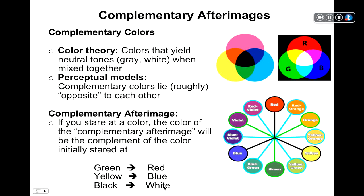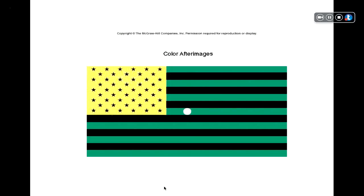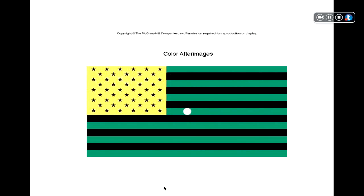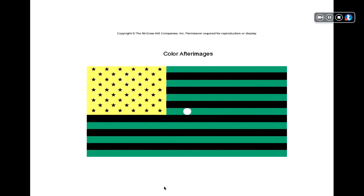Let's look at a complementary afterimage — stare at the white circle in the center of the flag. What you should see afterward is the American flag. After staring at green, black, and yellow, you see red, white, and blue. According to Young-Helmholtz theory, we should continue to see green, black, and yellow, but we don't — we see red, white, and blue. Like any good theory, it has its limitations.